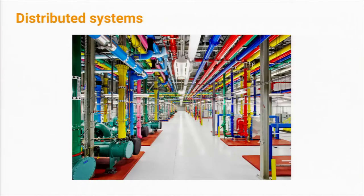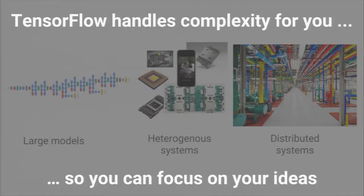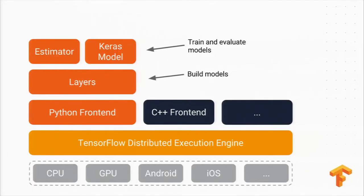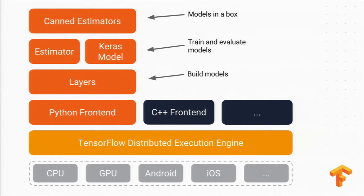Our goal is for TensorFlow to be a universal language for machine learning that manages as much complexity as possible so you can focus on your ideas. We're also adding higher-level APIs on top: layers and estimators. Keras, another popular open source machine learning framework, is now officially supported — the lead developer of Keras has recently joined the TensorFlow team. And at the top level we even have canned estimators, which are models in a box you can just apply to a particular domain.